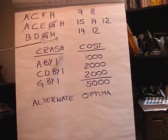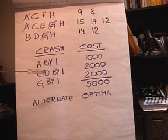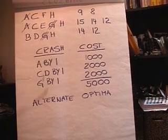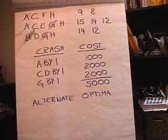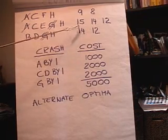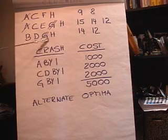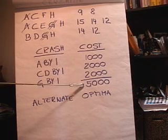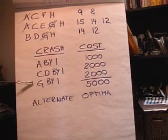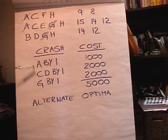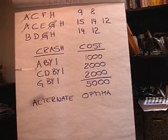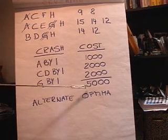This is an alternate optimal problem, meaning there is more than one way to reach an optimal solution. One possible solution: crash A by 1 at $1,000 to go from 15 to 14, then crash C and D each by 1 at $1,000 each (total $2,000) to bring both paths from 14 to 13, then crash G by 1 at a total cost of $5,000. There may be other solutions as well. What we're trying to do is reduce the time of completing the project but do it at a minimum total extra cost.